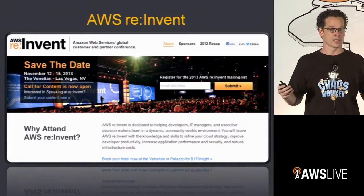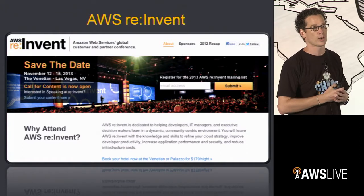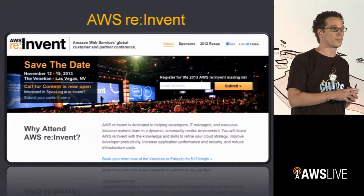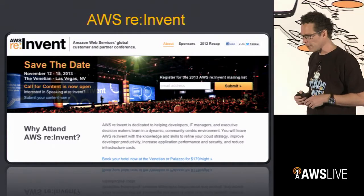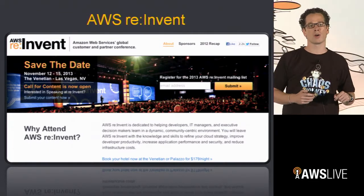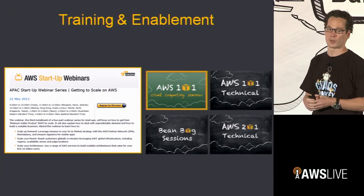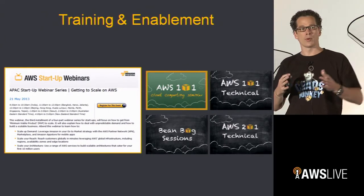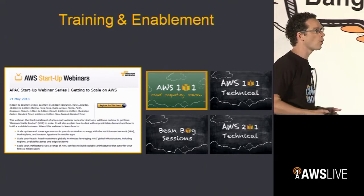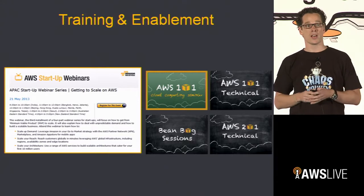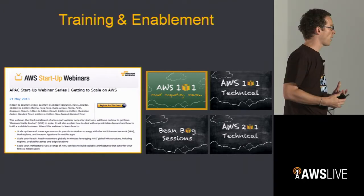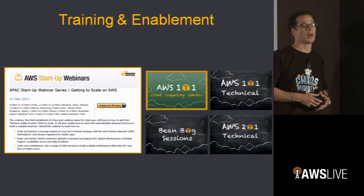We organize a lot of our own events — summits like this one, as well as AWS re:Invent, our customer and developer conference held every year in Las Vegas. The first one had about 6,000 people and was massive. Training is super important — we do AWS 101 introductions to cloud, technical trainings, one-on-ones, beanbag sessions in cities across India focused on the startup community and mentoring, and scalable startup webinars throughout Asia-Pacific.